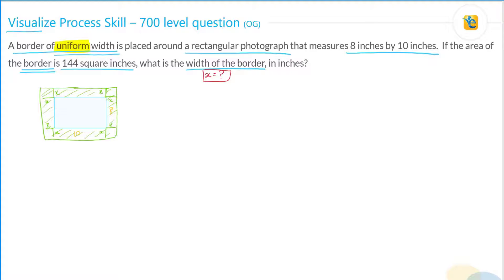And the shaded area, the green area over here, is 144 square inches. Now, what is this green area? If you think about it, this entire dimension here is 10 + x + x, which means that it's 10 + 2x. And this overall dimension over here is 8 + x + x, which means this is 8 + 2x.